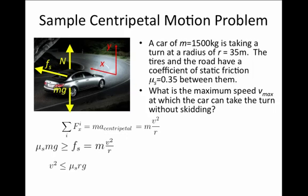This says that the velocity has to be less than some maximum, and that maximum can be bigger if I have a bigger radius of the turn, which makes sense. If I try to take a really tight turn, I'm more likely to slip.